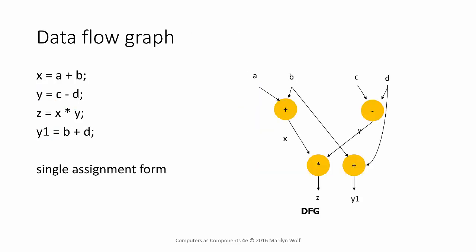Here's our data flow graph taken from the single assignment form. Each operator in the code is represented by a node in the graph. A variable, whether on the right-hand side or the left-hand side, is represented by an edge in the graph. All the edges are directed to show where data comes from and where it goes to. So we have A plus B, which produces the X value; C minus D produces the Y value; Z is produced by X and the multiplication with Y; and Y1, the second assignment to Y, is produced by the sum of B and D.